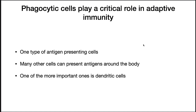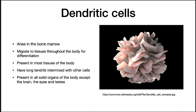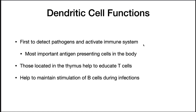One of the more important antigen presenting cells is dendritic cells. Dendritic cells arise in the bone marrow and migrate to tissues throughout the body for differentiation. They are present in most tissues of the body. They have long tendrils that are intermixed with other cells, and they will take up antigens or macromolecules and then process them for presentation. They are present in all solid organs of the body except the brain, the eyes, and the testes. Dendritic cells are the first to normally detect pathogens and activate the immune system, and they're probably the most important antigen presenting cells in the body. Those located in the thymus help to educate T cells, and they will help to maintain the stimulation of B cells during infections until the infectious agent is cleared.